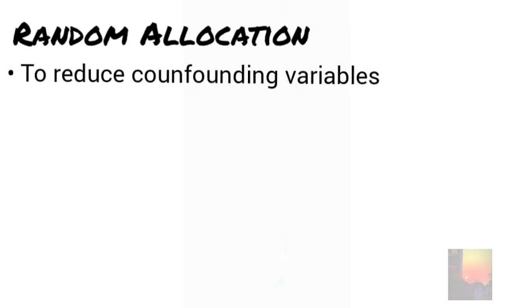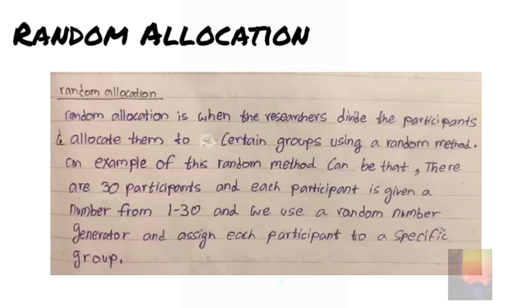Now we are going to be talking about random allocation. The reason we allocate participants into groups is because we want to reduce confounding variables such as individual differences. Random allocation is when the researcher divides the participants and allocates or distributes them to certain groups using a random method.